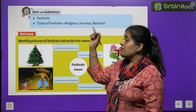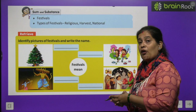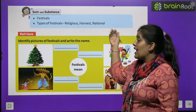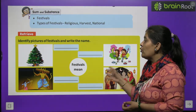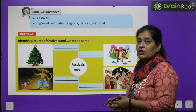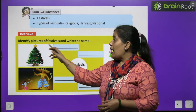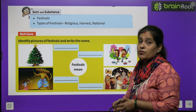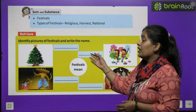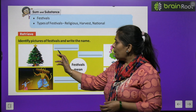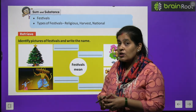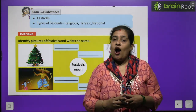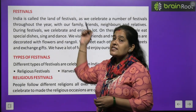In this chapter, first we will do one activity: Identify pictures of festivals and write their names. यहाँ पे festivals की pictures बनी हुई हैं, आपको उनके नाम लिखने हैं. तो पहली picture है Christmas tree की - यह कौन सा festival है? Christmas. इसी तरह आप बाकी की pictures देखेंगे और festivals के नाम लिखेंगे.